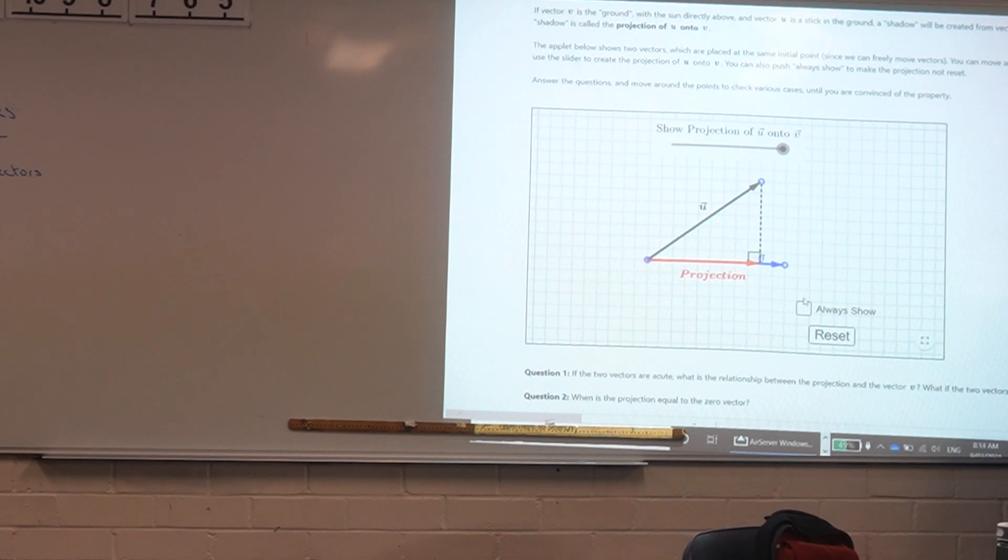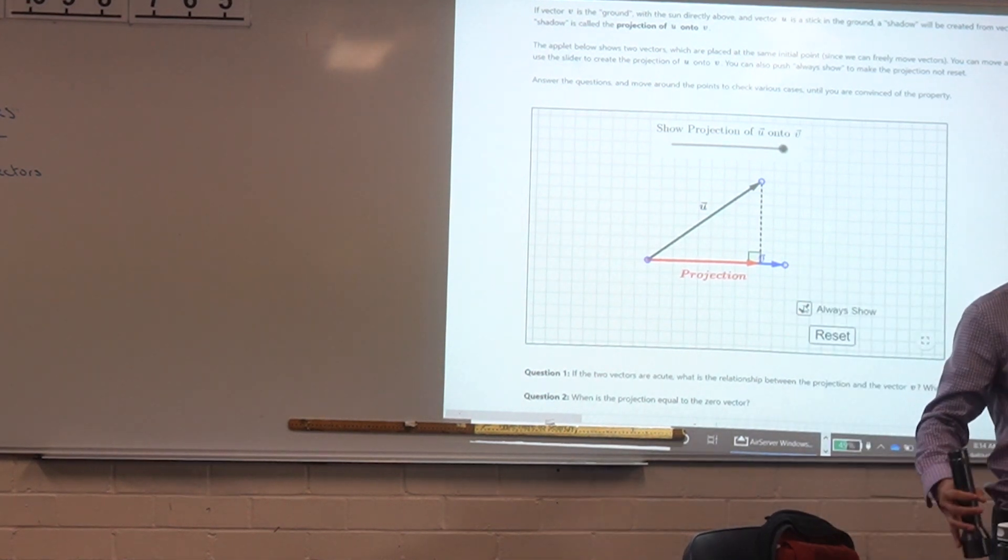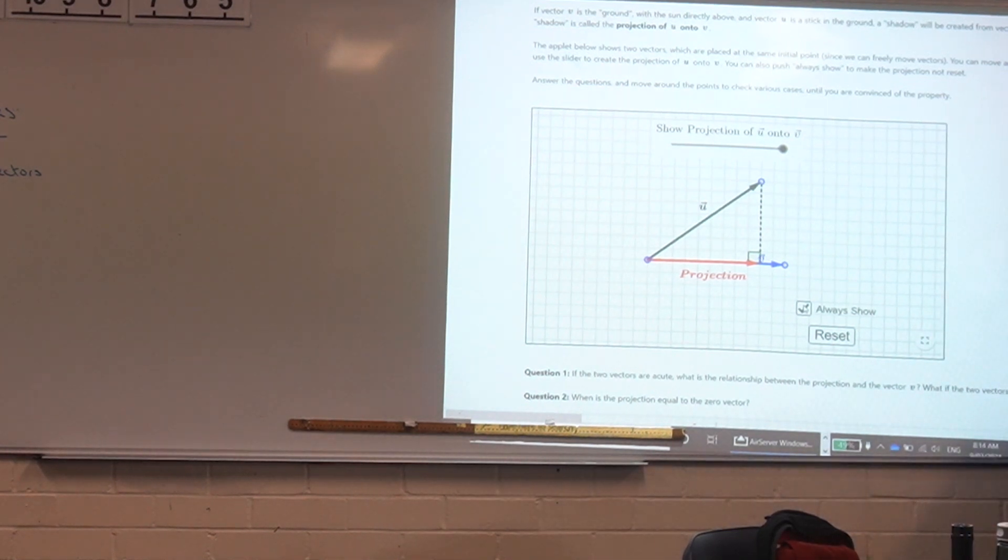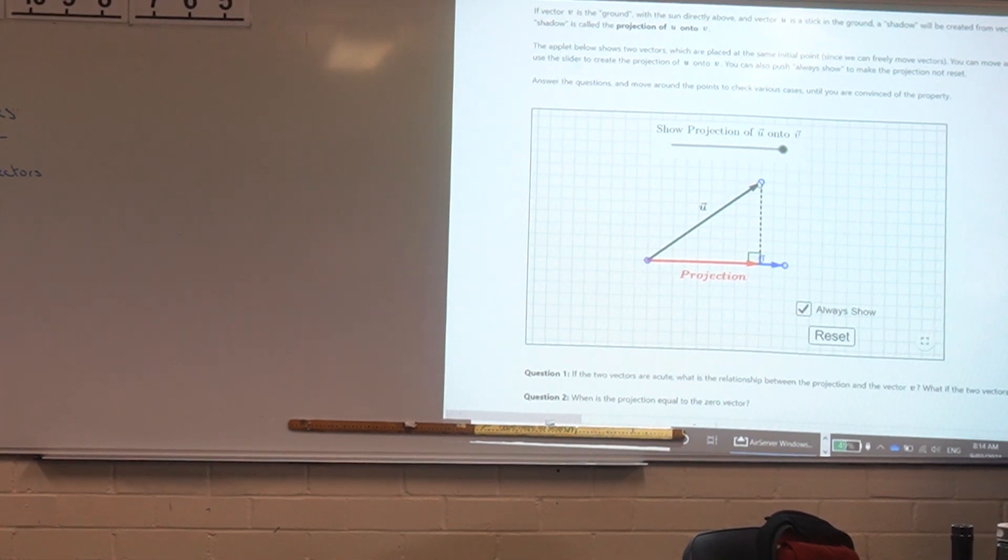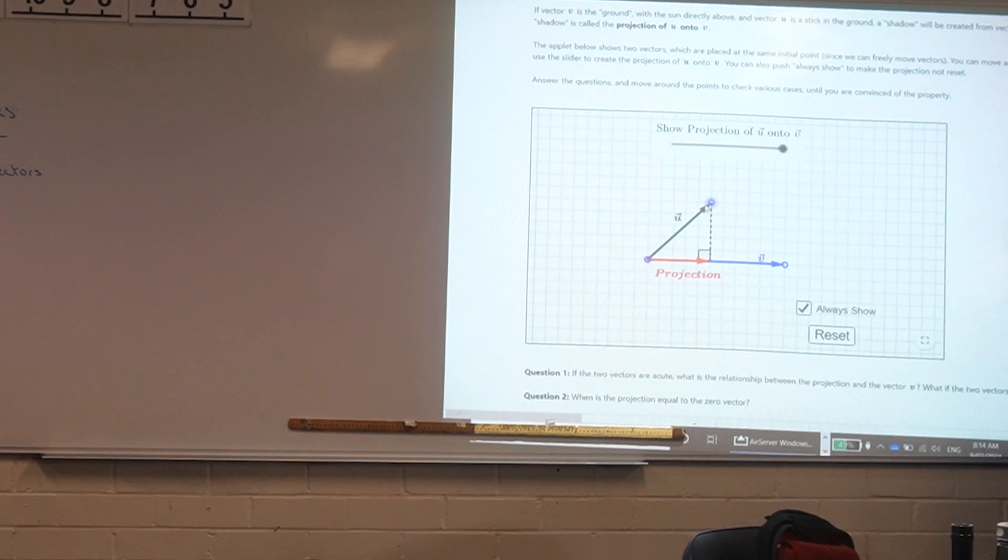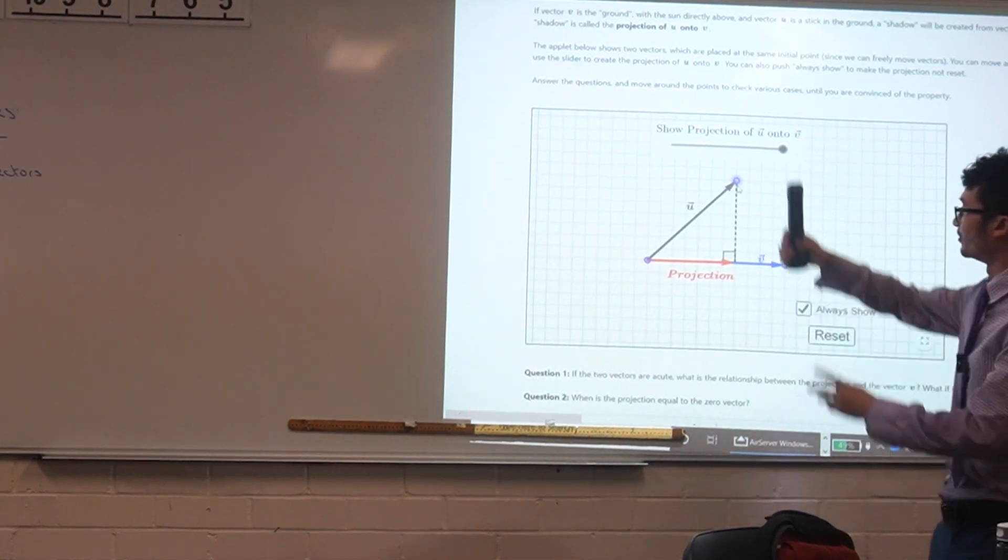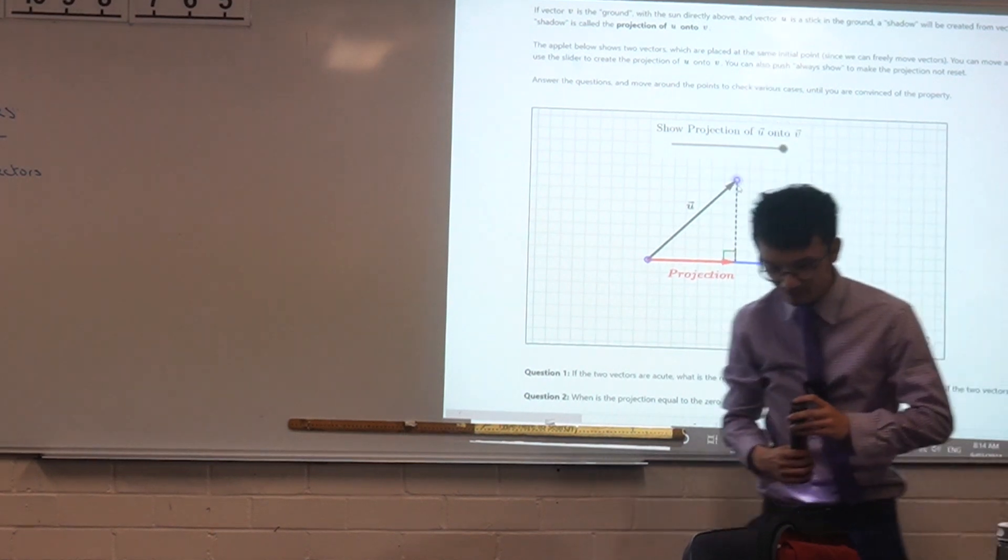Right and so can you see that this is like what we say is a projection. Some interesting things to note about this. We can change these around so as we move this vector around what happens to our shadow? It shrinks right, because the light source is always staying on the top there. That's the idea.